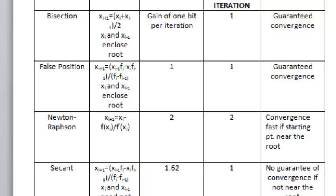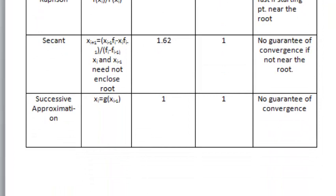xi+1 equals xi minus 1 divided by (fi minus fi-1), where xi and xi-1 enclose the root. And for successive approximation method, xi equals g(xi-1), where g(xi) is an appropriate function of x.